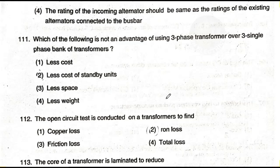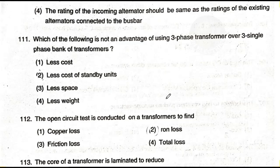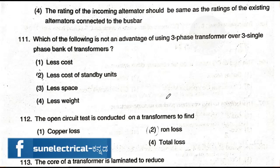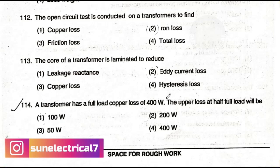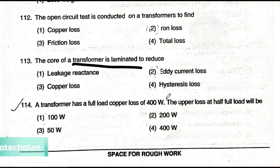Question number 112: The open circuit test on a transformer is used to find — option one: copper loss; option two: iron loss; option three: friction loss; option four: total loss. The answer is option two — iron loss. The open circuit test is used to determine the iron loss of a transformer.